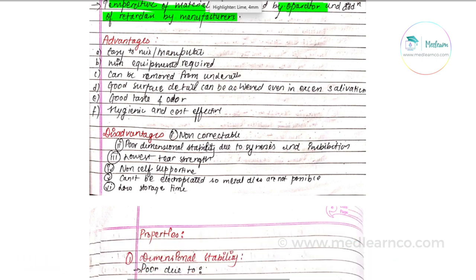Advantages of alginate: it is widely used, easy to mix and manipulate, requires minimum equipment, can be removed from undercuts as it is an elastic material, provides good surface detail capture even with excess salivation, has good taste and odor as alginate powder comes in different flavors, and is hygienic and cost-effective.